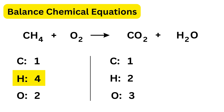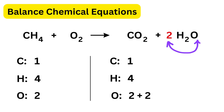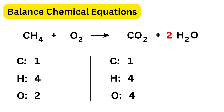Hydrogen is not balanced — four on the left but only two on the right. We put 2 in front of H₂O, giving four hydrogens on the right. Now recalculate oxygen: 2 from CO₂ and 2 from 2×H₂O gives four oxygens on the right. To fix oxygen we put 2 in front of O₂ on the left, giving four oxygens. Both sides now match.